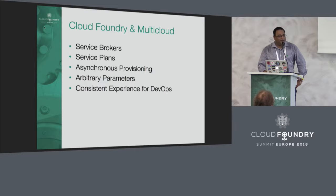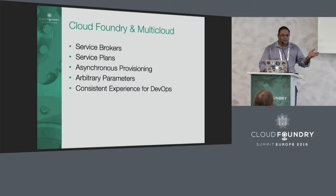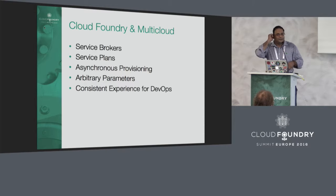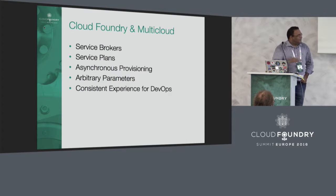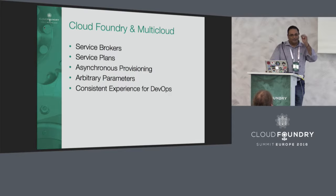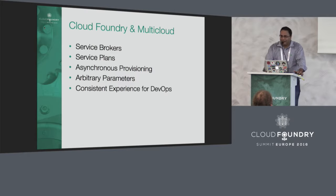That's a pretty powerful concept — you as a developer can select which cloud you're going to use. Customers are starting to realize they can use GCP for development but have their production environment on AWS. These are cost decisions and performance decisions they're making. We'll talk about service plans, since each service can have multiple plans, and how DevOps is simplified and made more secure by this approach.